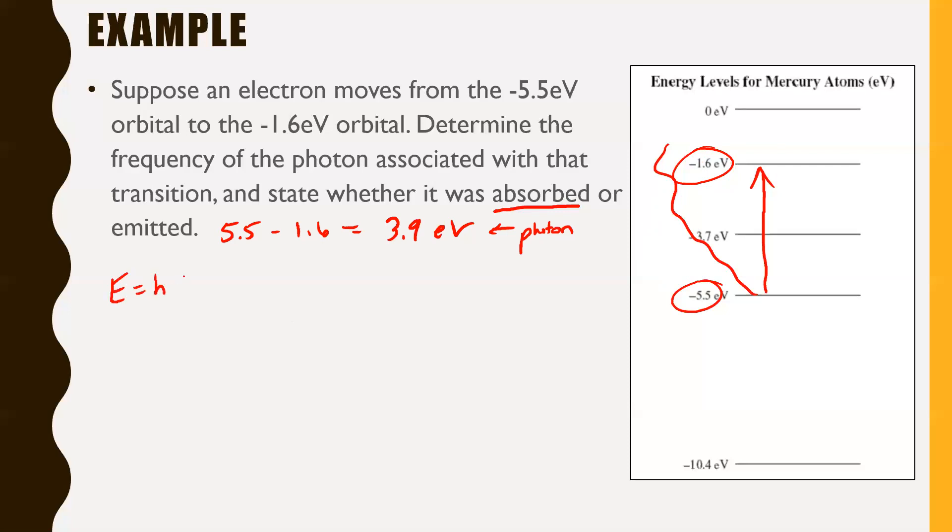How do we find the energy of a photon? Well, there's a formula in your formula sheet that says E = hf. This is the energy, we're looking for the frequency, and h is a constant. Since we're dealing in electron volts, you'll have to use the h that has electron volts. Let's throw all these in here: E is 3.9, h in electron volts is 4.14 × 10⁻¹⁵, and then f is what we're looking for. Just divide by the 4.14 × 10⁻¹⁵. You're going to find that f = 9.4 × 10¹⁴ hertz, to two sig figs.